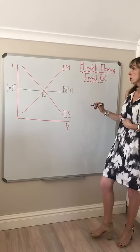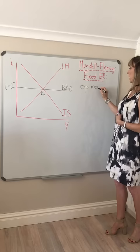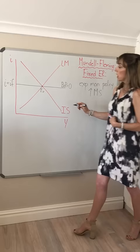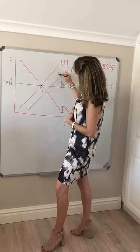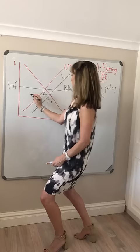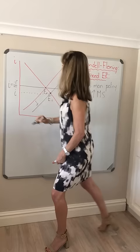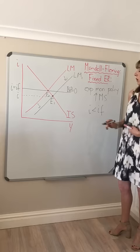Let's take a look at an expansionary monetary policy — say an increase in the money supply, which could be brought about through open market operations. That's going to cause your LM curve to shift to the right, and as it shifts to the right we can see that our domestic interest rate falls below that prevailing in world markets. So what is that going to do?